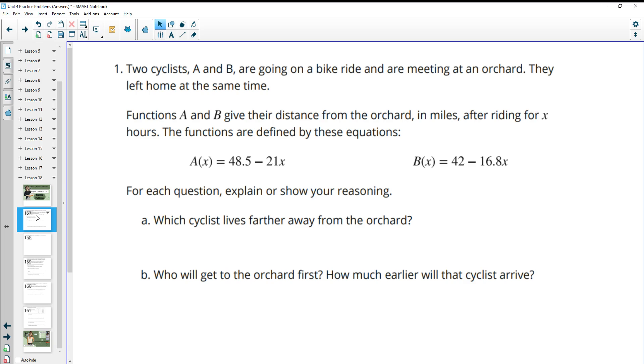Number one tells us that two cyclists, A and B, are going on a bike ride and are meeting at an orchard. They left home at the same time. Functions A and B give their distance from the orchard in miles after riding for X hours. For each question, explain or show your reasoning. Which cyclist lives further away from the orchard?